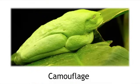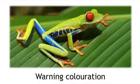Red-eyed tree frogs are predominantly green to camouflage against leaves, but they have blue and orange features which are used for warning predators.